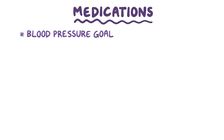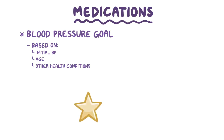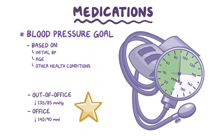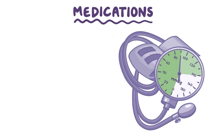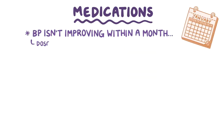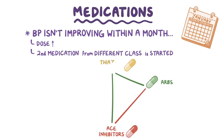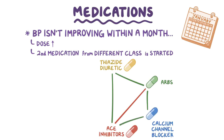The blood pressure goal while on medications varies based on the initial blood pressure, as well as age and other health conditions. In general, it's ideal to have an out-of-office blood pressure below 135 over 85 mmHg, and an office blood pressure below 140 over 90 mmHg. If the blood pressure isn't improving within a month, the dose is usually increased or a second medication from a different class is started. ACE inhibitors and ARBs should not be combined; instead, either can be combined with a thiazide diuretic or a calcium channel blocker.